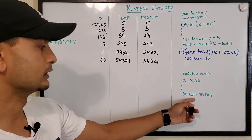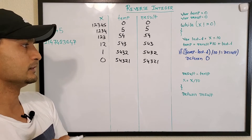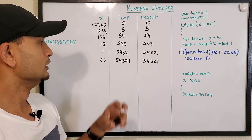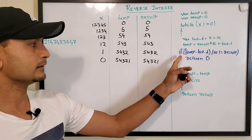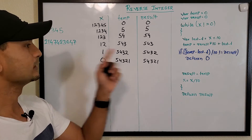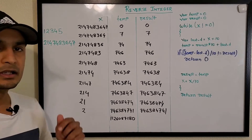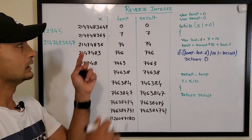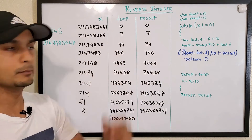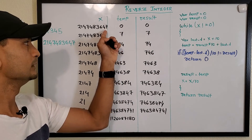The interesting part is handling overflow. Now let's look at the other example and see how we handle it. Initially the numbers are zero, we take the last digit, multiply by 10 and add the last digit, and keep doing that until we reach a critical stage.